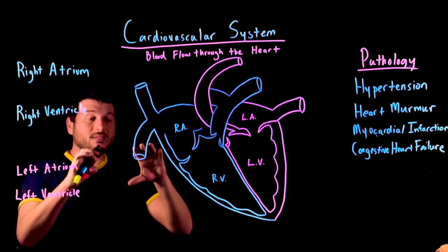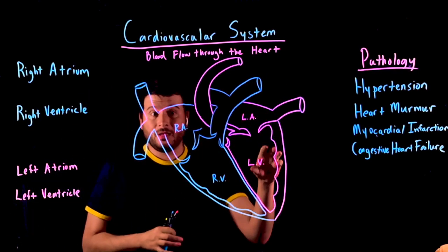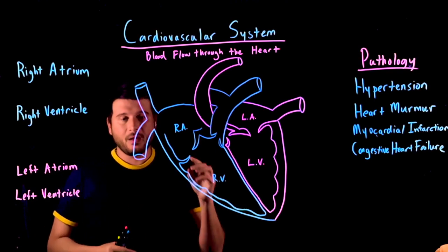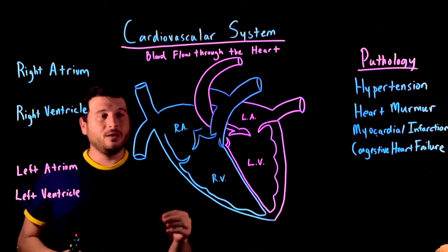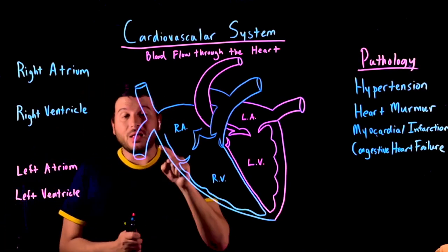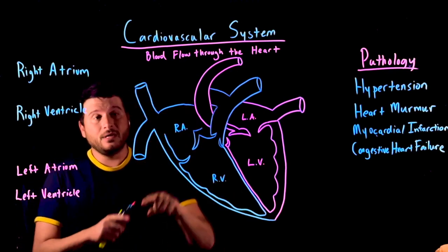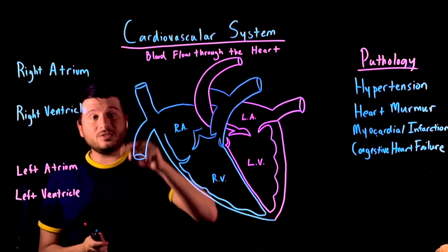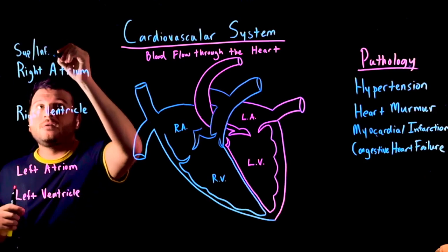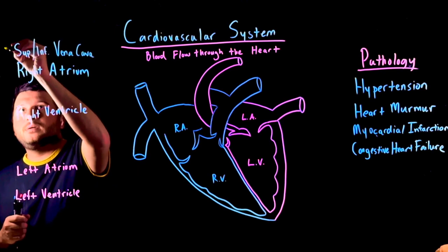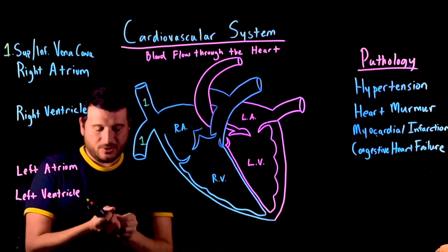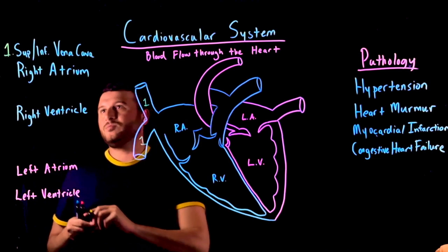Now we're going to discuss how blood flows through this heart because it's very important. Because it's cyclical, there really isn't a starting place. But normally when we discuss this, we talk about the beginning being the right atrium. Blood is going to come from the body to the right atrium through two vessels known as the superior and inferior vena cava. So the superior and inferior vena cava will bring blood to the right atrium.